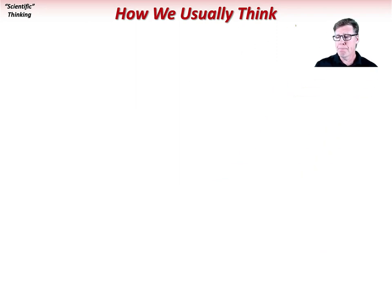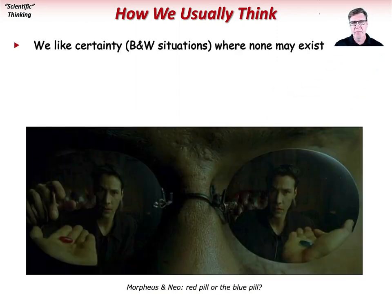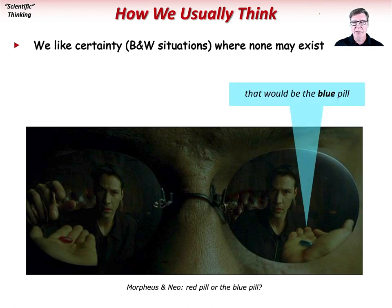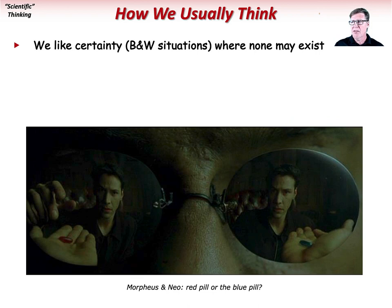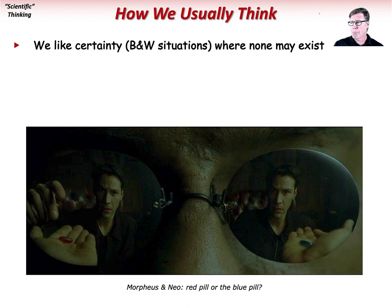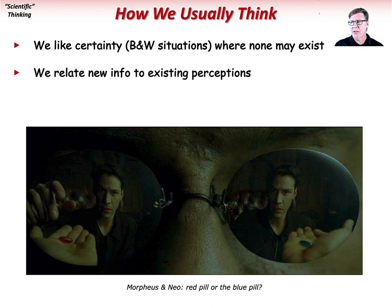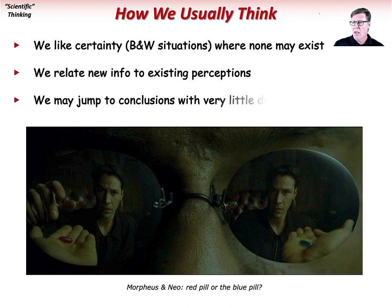Now let's talk about how we usually think. We tend to like certainty and black-and-white situations even where none may exist. We need to acknowledge that complex situations exist and that clear answers may not be available or even understandable. We tend to relate new information into our existing perceptions, which may not initially be a bad thing if our preconceptions are correct. But we need to be careful, as it's always dangerous to build our scientific arguments on shaky foundations. We also tend to jump to conclusions with very little or even no data. The human ego is a major factor that should have no bearing on how science is done.